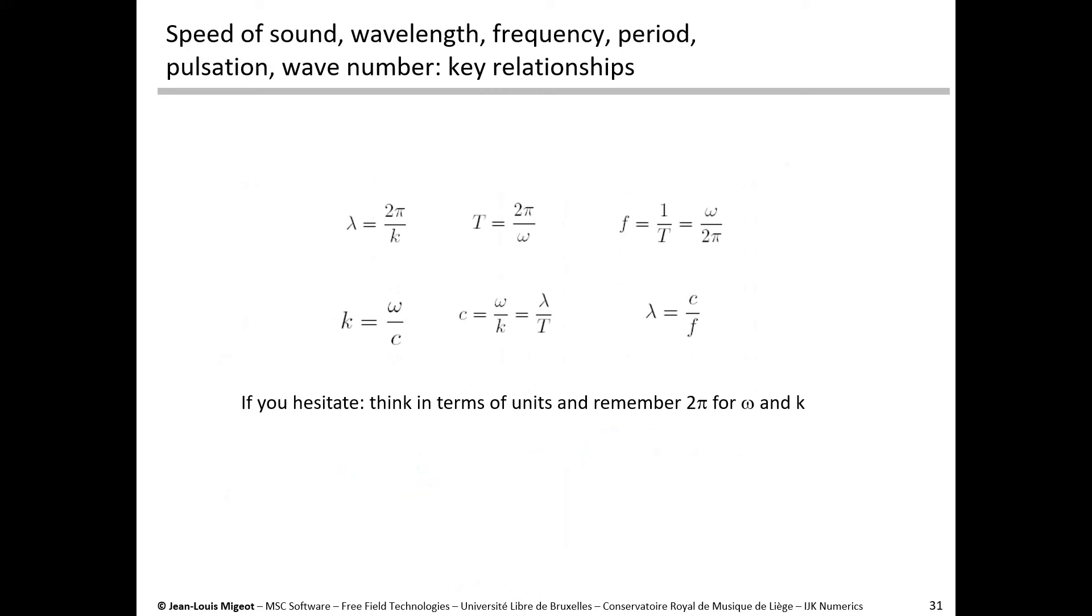It may be a good occasion to remind you of a set of very important formulas that we are going to use over and over, and which are common to all fields of physics involving waves. We have a number of indicators representing the signal and the wave, the frequency, the period, the wavelength, the wave number, the pulsation, the speed of sound, and they are all closely connected.